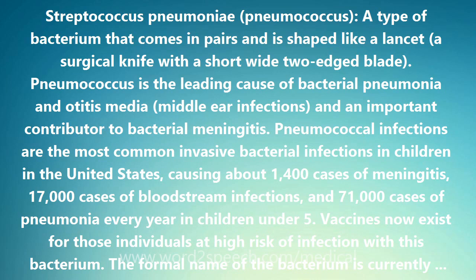The formal name of the bacterium is Streptococcus pneumoniae. The prefix 'strepto' means twisted, and 'coccus' comes from the Greek meaning berry. Because it comes in pairs, it has also been called Diplococcus pneumoniae. 'Pneumoniae' refers to its propensity to settle in the lungs and cause pneumonia.